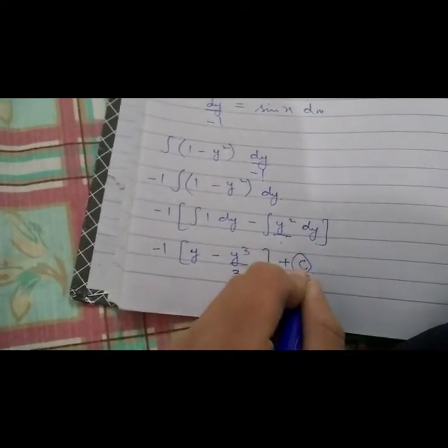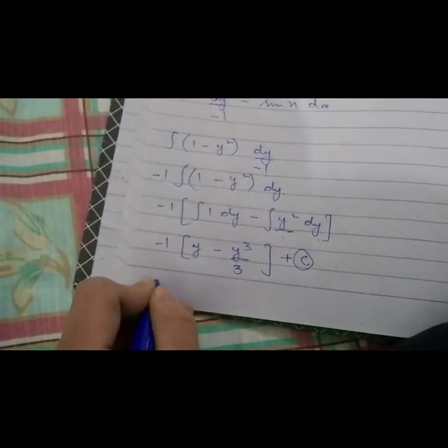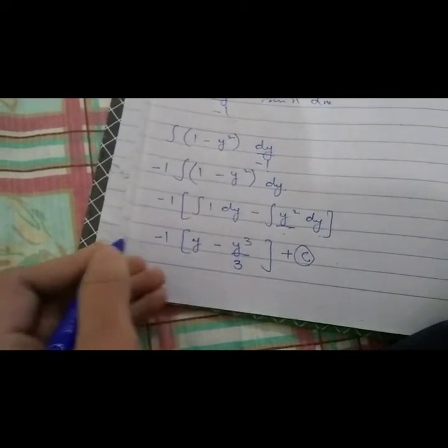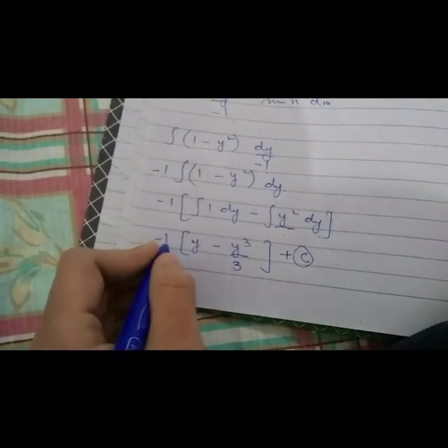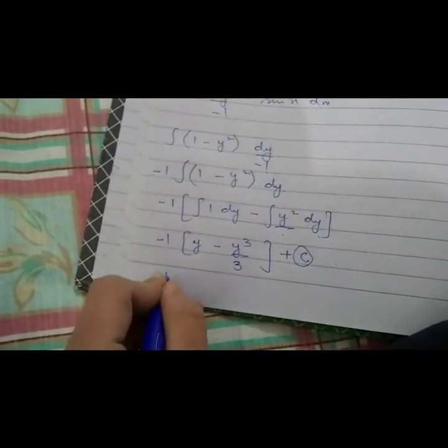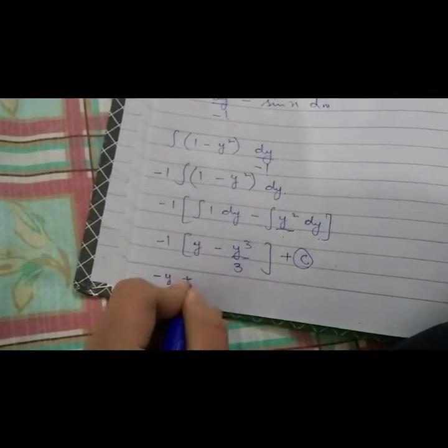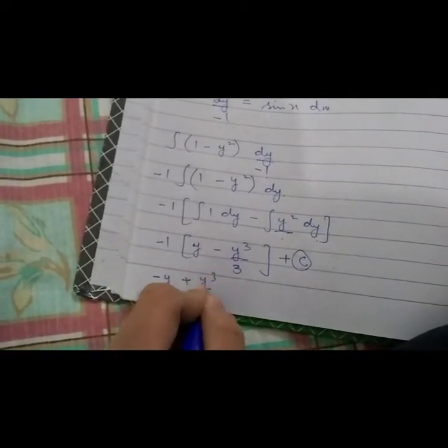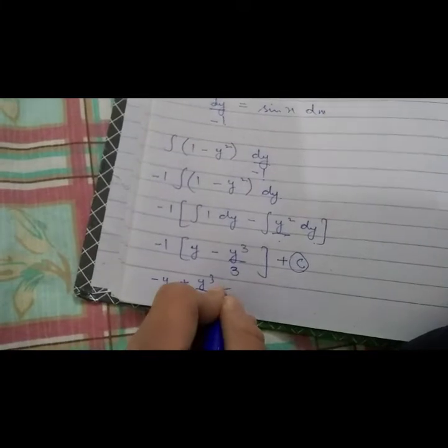So we have minus times the bracket, and now we multiply by minus 1. Minus y minus minus becomes plus, so it's minus y plus y cubed upon 3, plus c.